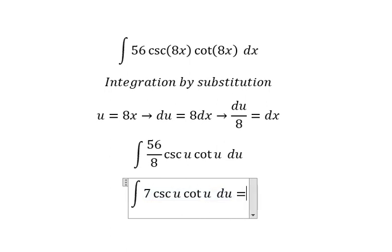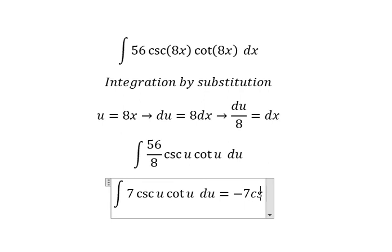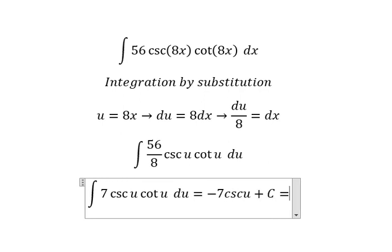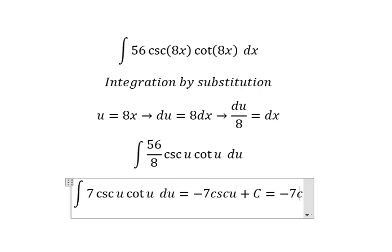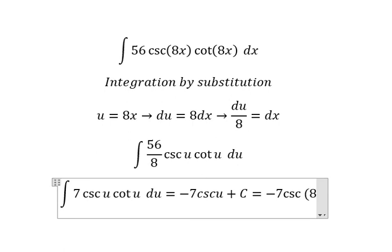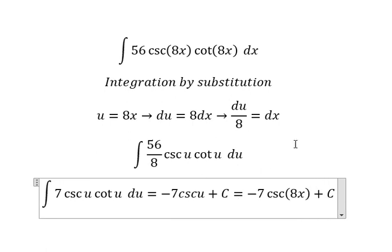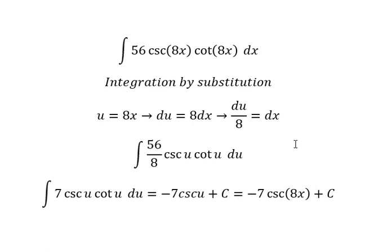We will have negative 7 cosecant of u, and we put c. u will change back to 8x. This is the end. Thank you for watching. Bye.